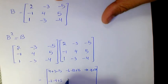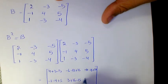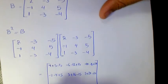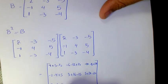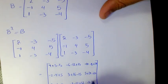Then we have negative two, minus four, plus five. Three plus sixteen minus fifteen. Five plus twenty minus twenty. Then two plus three minus four. Negative three minus twelve plus twelve. And finally negative five minus fifteen plus sixteen.